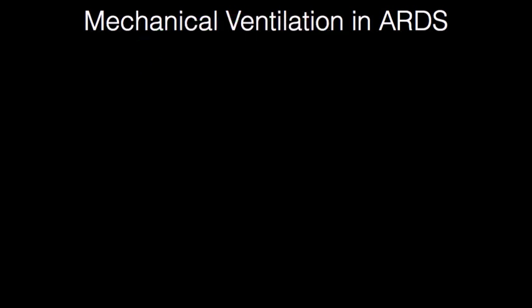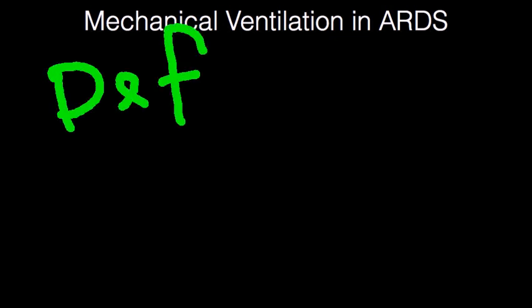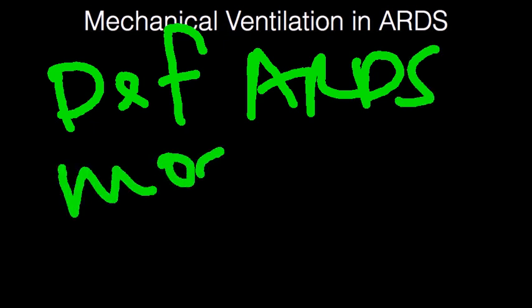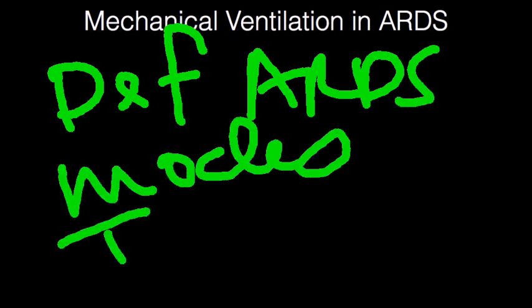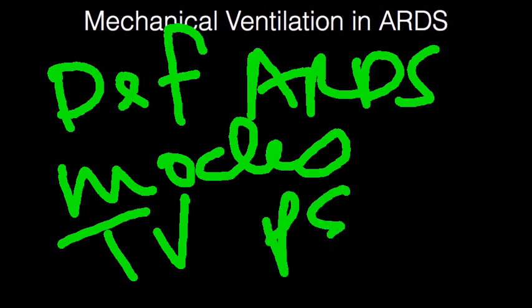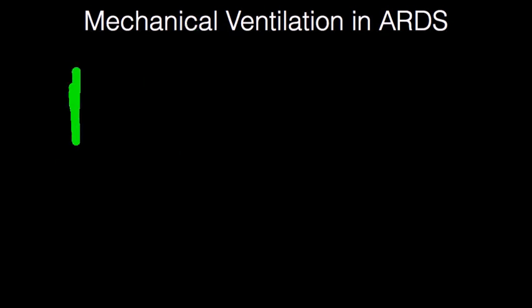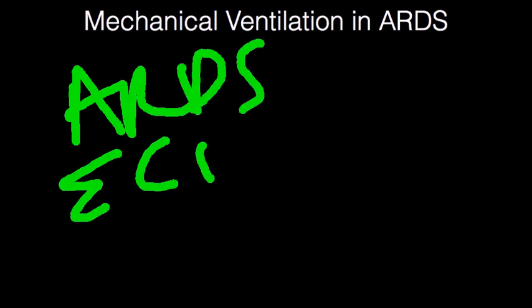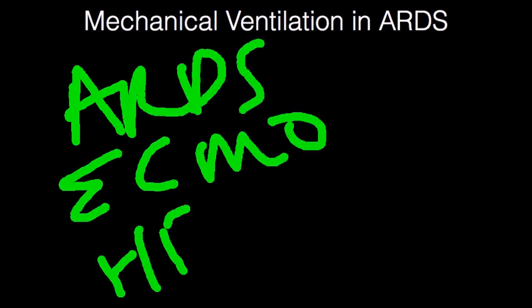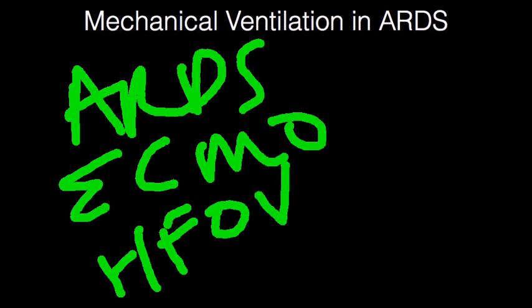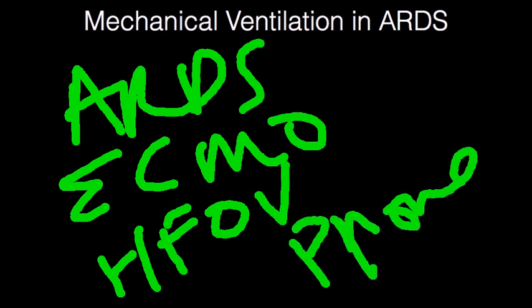In summary, today we covered general ventilator setup with reference to ventilator setup 101, the Berlin definition of ARDS, the modes of ventilation to use, target tidal volume, target PEEP with gradual titration, and other modes such as APRV, ECMO, high-frequency oscillatory ventilation, and prone ventilation for patients with ARDS.